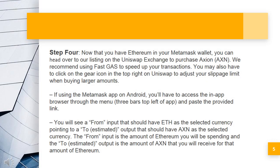Step 4: Now that you have Ethereum in your Metamask wallet, you can head over to our listing on the Uniswap exchange to purchase Axion. We recommend using FastGas to speed up your transactions. You may also have to click on the gear icon in the top right on Uniswap to adjust your slippage limit when buying larger amounts. If using the Metamask app on Android, you'll have to access the in-app browser through the menu — 3 bars top left of app — and paste the provided link. You will see a 'From' input with ETH as the selected currency, pointing to an estimated output with AXN as the selected currency. The 'From' input is the amount of Ethereum you will be spending, and the estimated output is the amount of AXN you will receive.